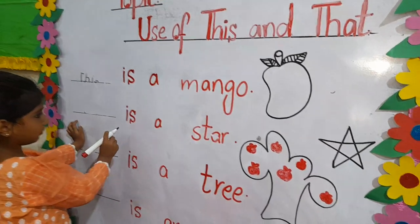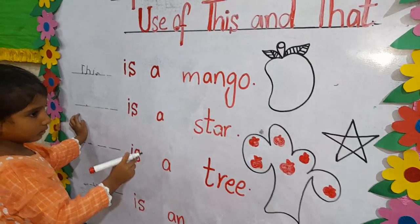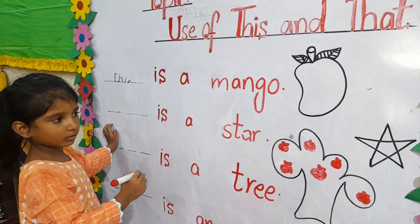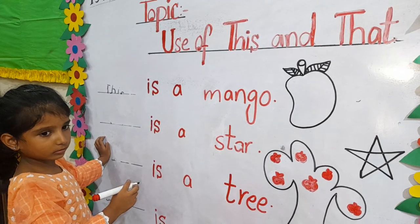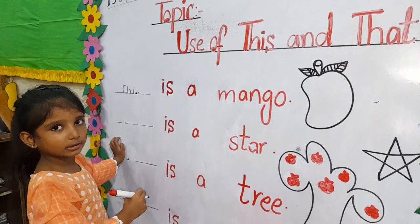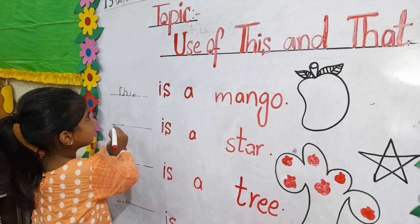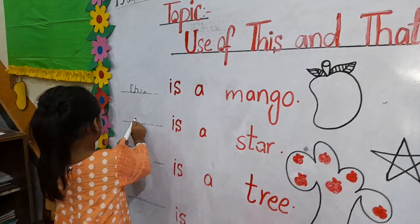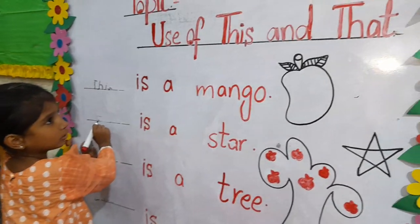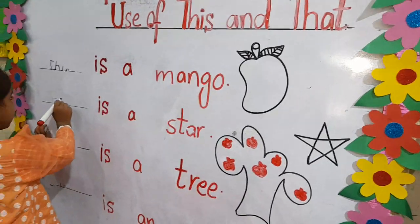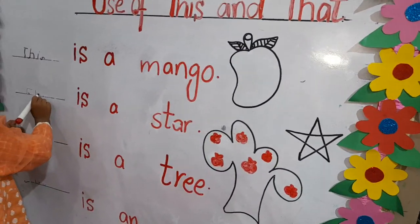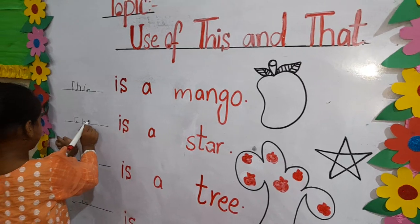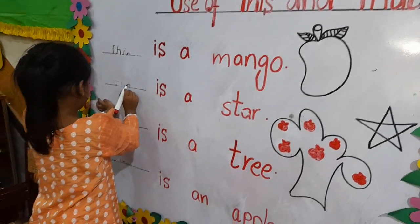Second — dash is a star. Star, is it close to it or far from it? What will we use for this? Dash. Let's write this — this is a tree.